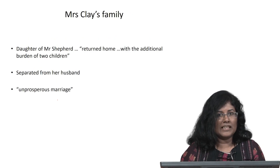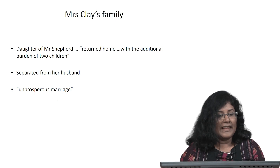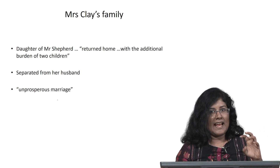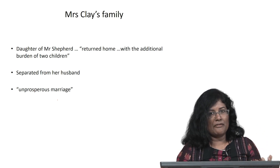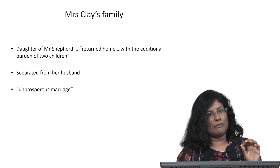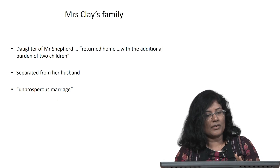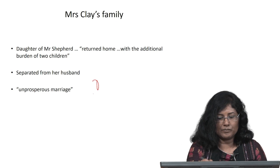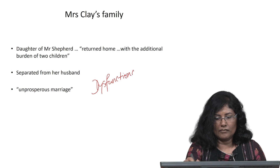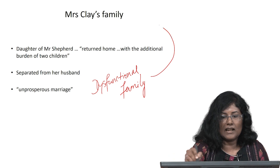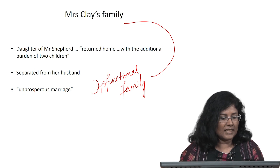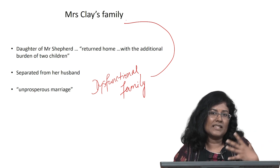Another figure introduced at the beginning of the novel is Mrs. Clay, the daughter of Mr. Shepherd, who has returned home with the additional burden of two children. Mrs. Clay has been separated from her husband and has come home after an unprosperous marriage. She is spending time with Elizabeth Elliot, the eldest daughter of Sir Walter Elliot. So once again there is another dysfunctional family in Mrs. Clay, who is seen as a burden by society.